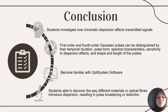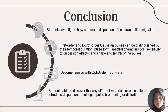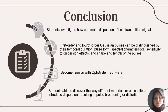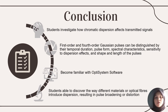In conclusion, the outcomes of this assignment are: students successfully investigated how chromatic dispersion affects transmitted signals and observed the broadening of Gaussian pulses between the first and fourth order. First and fourth order Gaussian pulses can be distinguished by their temporal duration, pulse form, spectral characteristics, sensitivity to dispersion effects, shape, and pulse length. Students became familiar with OptiSystem software used to analyze dispersion, and discovered how optical fibers introduce dispersion resulting in pulse broadening and distortion.